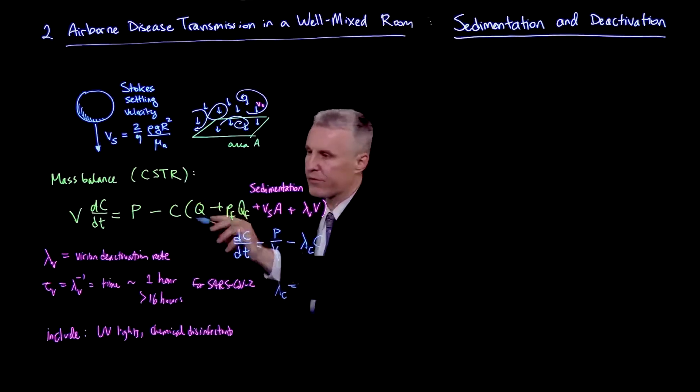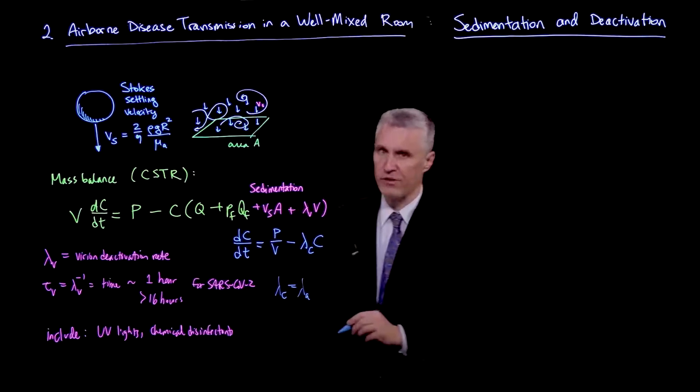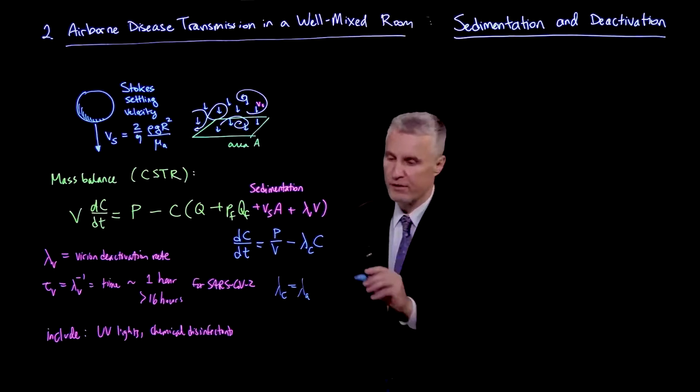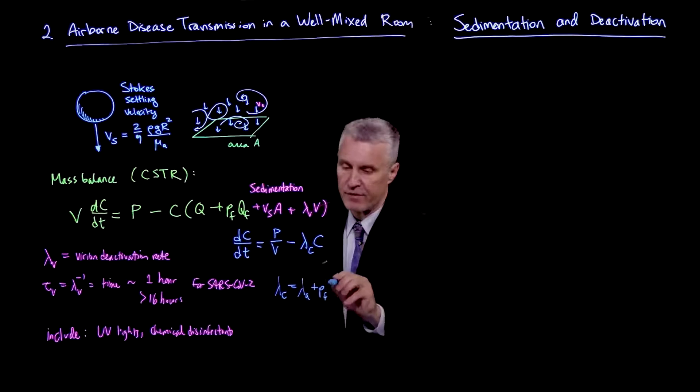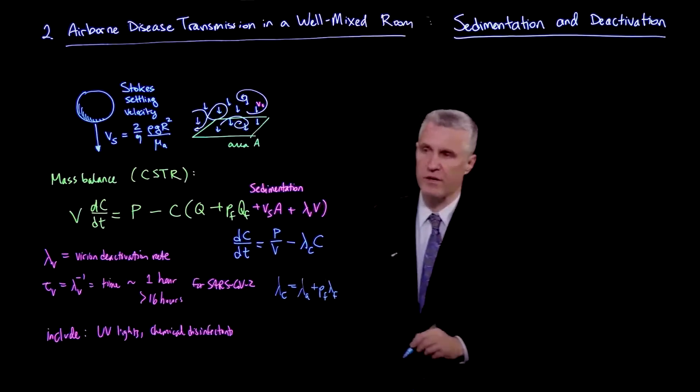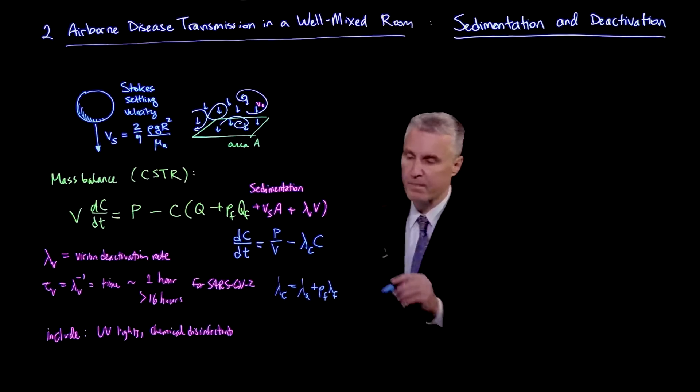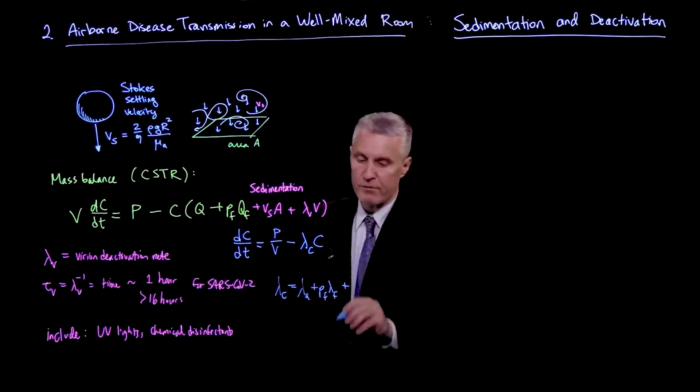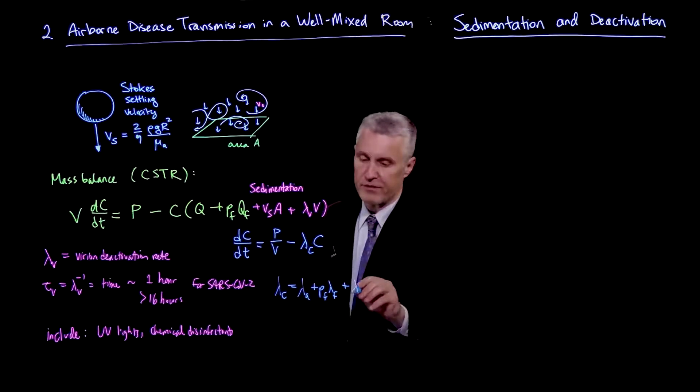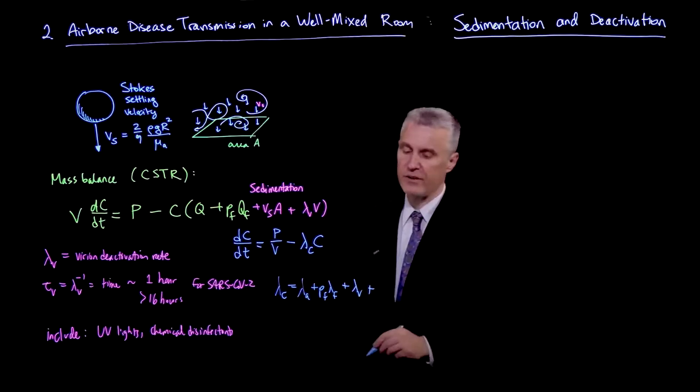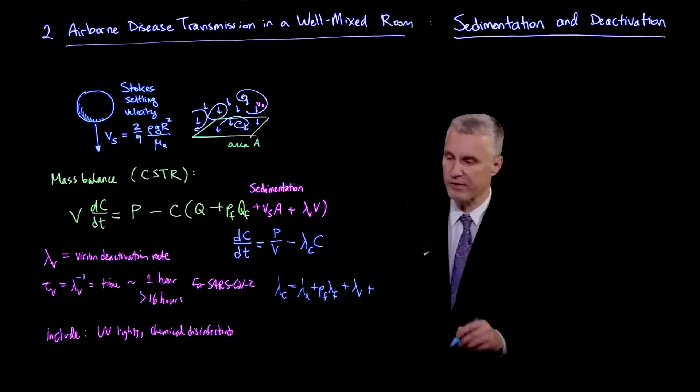So we can lump all these parameters. And we can write lambda_C is, from the first one, Q/V is lambda_A. That's the air change rate of outdoor fresh air. There is PF*lambda_F, which is the rate of filtration times the filter filtration efficiency, PF. And then we have lambda_V. That's an easy one.